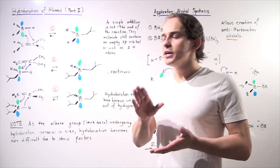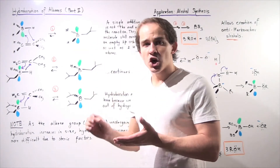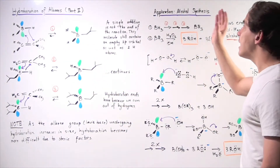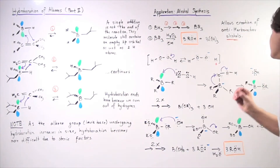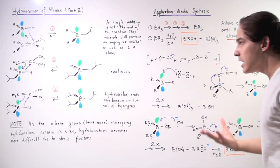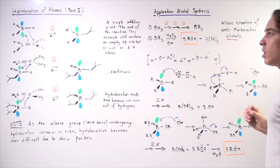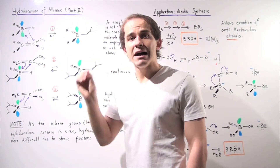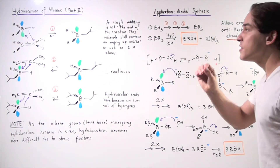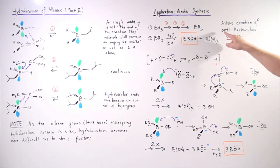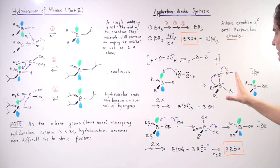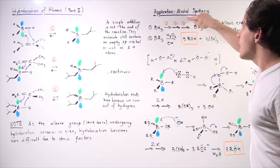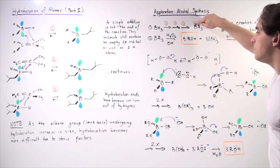Now let's examine the most important application of our hydroboration reaction: the synthesis of anti-Markovnikov alcohols. Thus far we have spoken about producing Markovnikov alcohols from a straightforward hydration reaction. This mechanism allows us to produce the least stable, least substituted alcohol — the anti-Markovnikov alcohol. We begin with BH3, react with our alkene three times via three mechanisms, and form our BR3 group, where each R group is an alkyl group attached to boron.